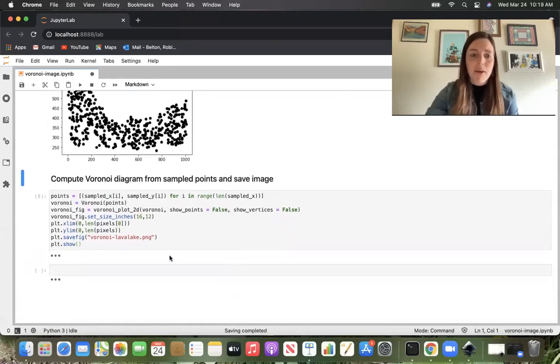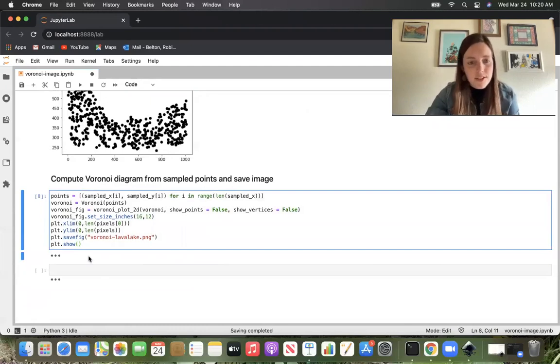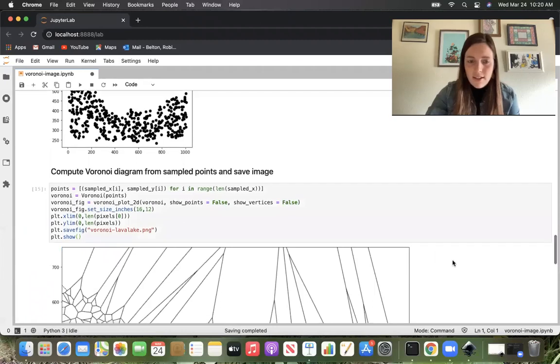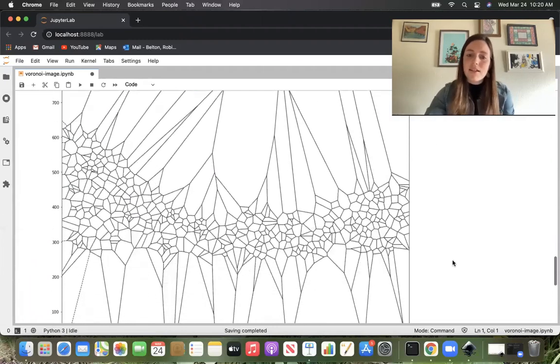In Python, there are packages that compute Voronoi diagrams so we don't have to rewrite that code. We can use what's already out there. That is what this code is going to do. And I run it. And here we have a nice, beautiful Voronoi diagram of our points that we picked out from our image. So here we go.